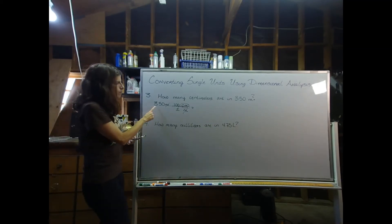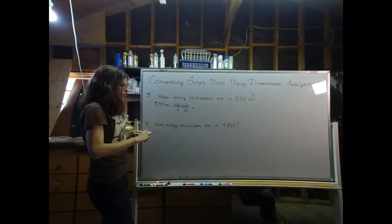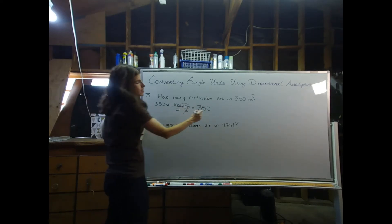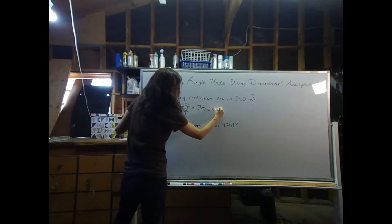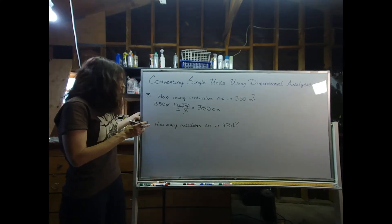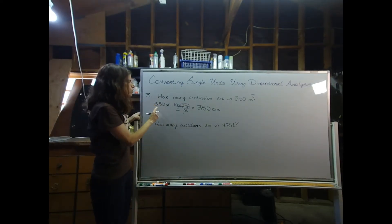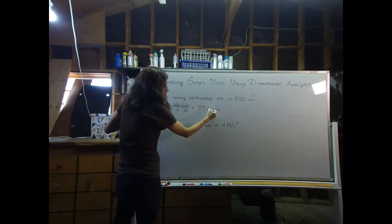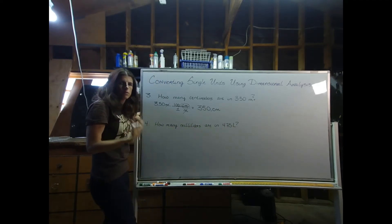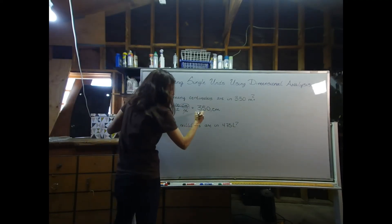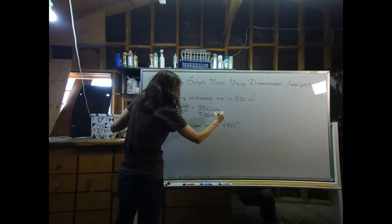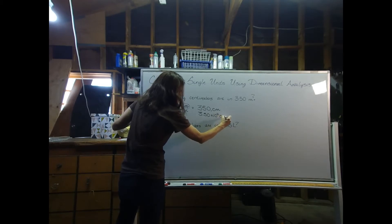In my calculator I'm going to do 3.50 times 100, which gives me 350, and I need to include the centimeters — always include units. For sig figs, the starting value has three sig figs. To make that clear, we could put a period on the end, or write it as 3.50 times 10 to the second centimeters, which makes the three sig figs unambiguous.